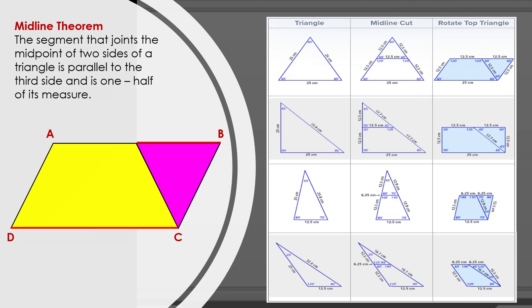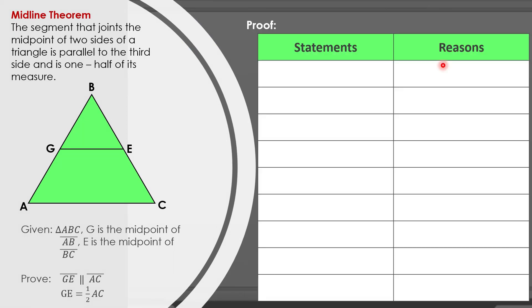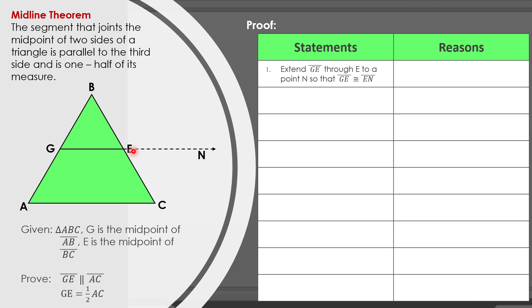Now let us prove the midline theorem deductively using a two-column proof, in which we have statements and reasons. Given triangle ABC, G is the midpoint of AB and E is the midpoint of BC. We will prove that GE is parallel to AC, and that GE is equal to one half of AC. For our first statement, let us extend GE through E to a point N so that GE is congruent to EN. We will extend a ray, giving us EN, and put markings to indicate congruence. The reason is the auxiliary line — also called a helping line — which is an extra line drawn to complete a proof.